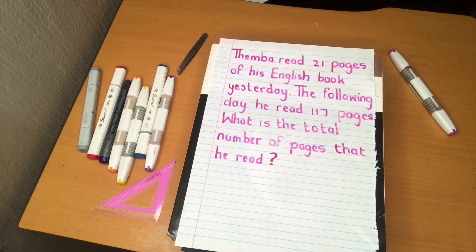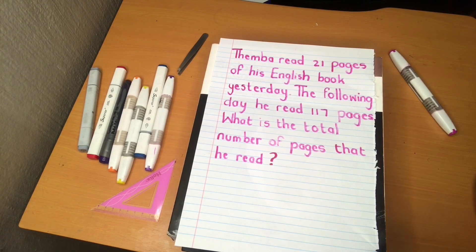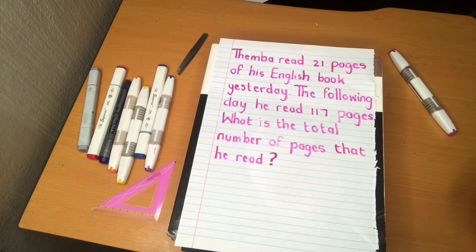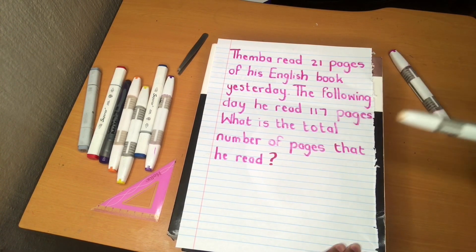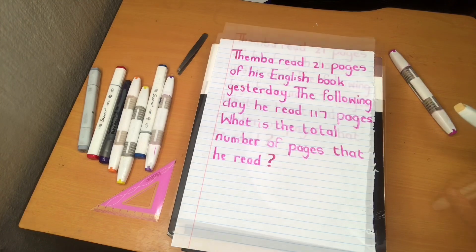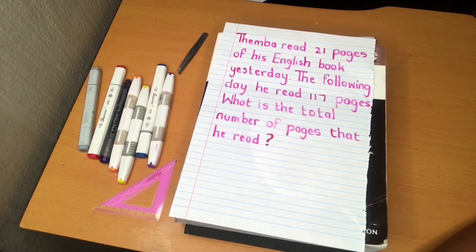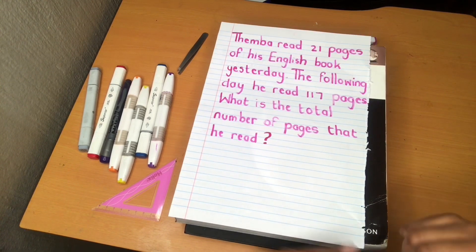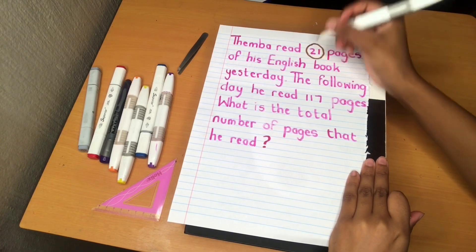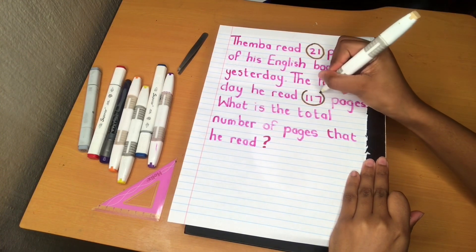Before we work on the problem, we need to find the special word that will help us figure out what kind of word problem this is. The special word is 'total.' The word 'total' shows us that this is an addition word problem. There are two numbers we need to add together, and these numbers are 21 and 117.